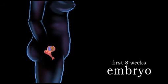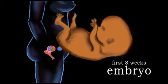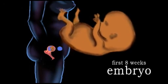For the first eight weeks, the developing organism is called an embryo. During this period, cells differentiate into specific body parts and organs.